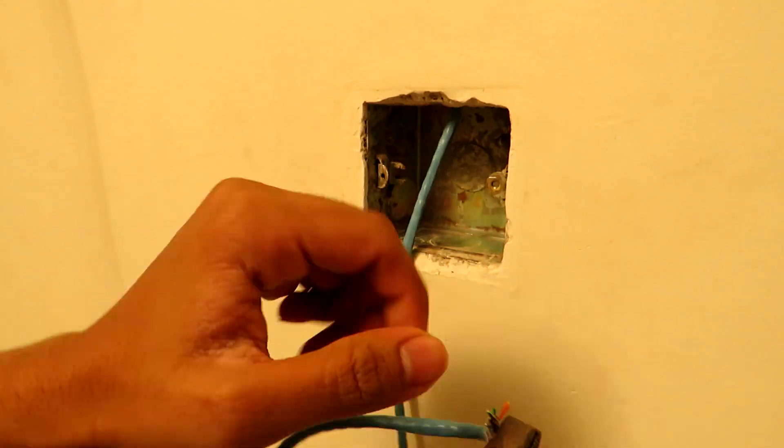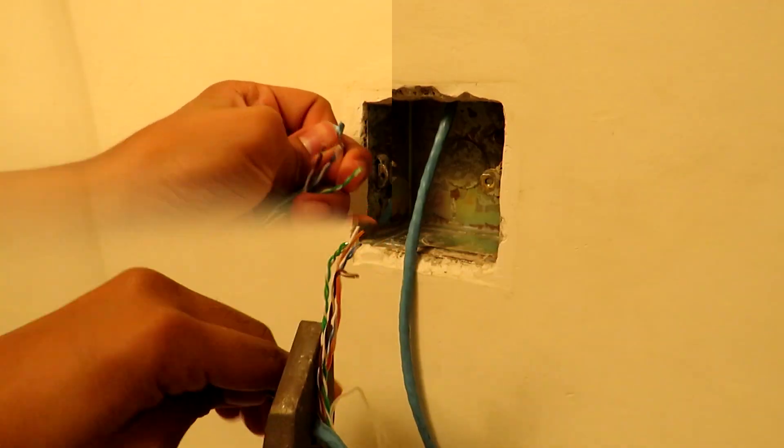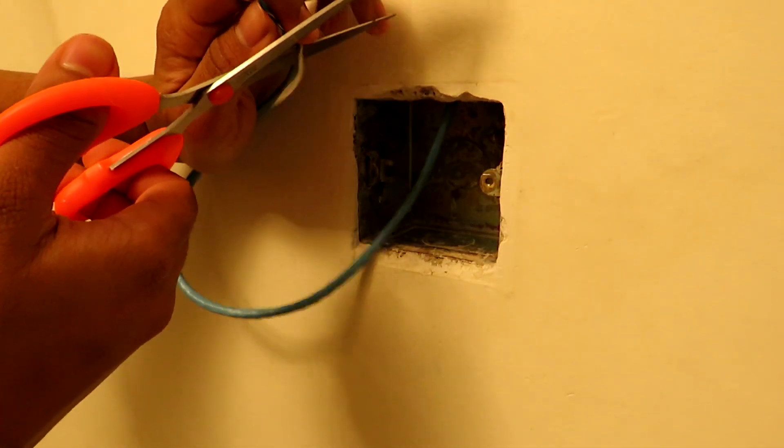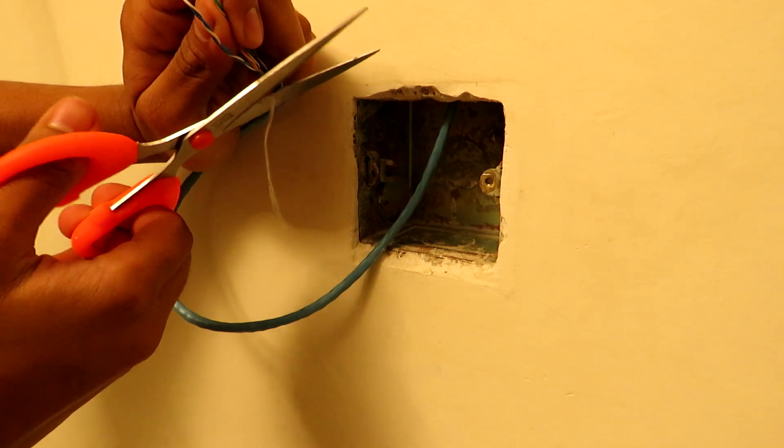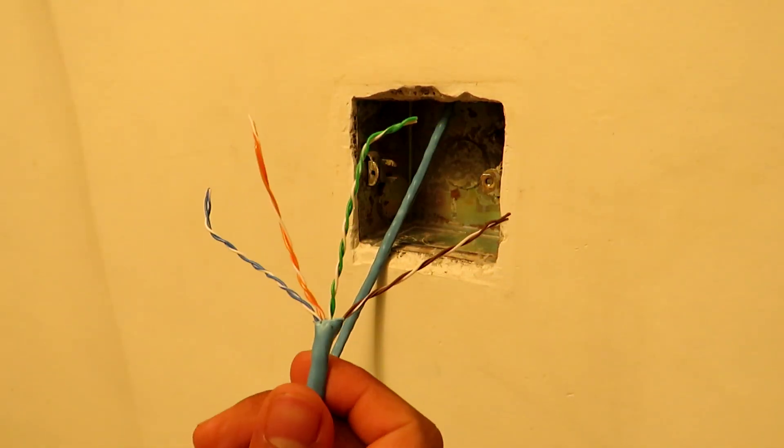To start off, firstly we are going to remove the outer insulation sheath of our incoming CAT6 LAN cable. In this manner we have removed the insulation and we are even going to cut off the excess length of the pullback string. These are the four pairs what we have to connect to our socket.